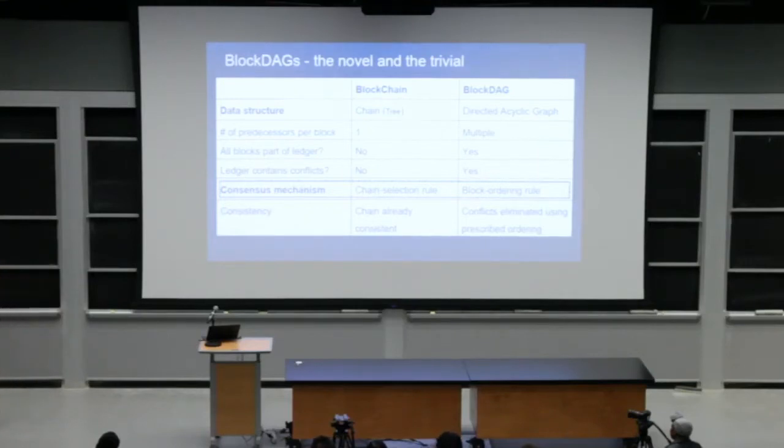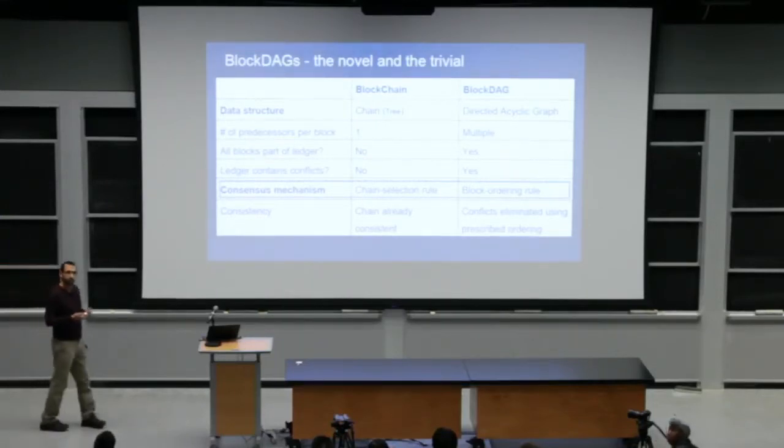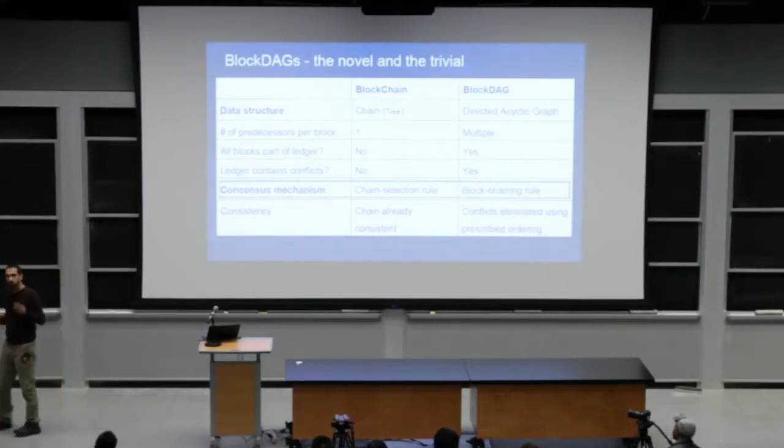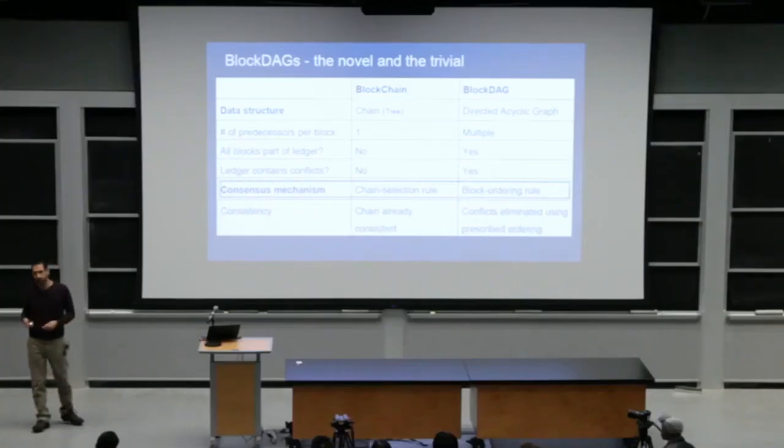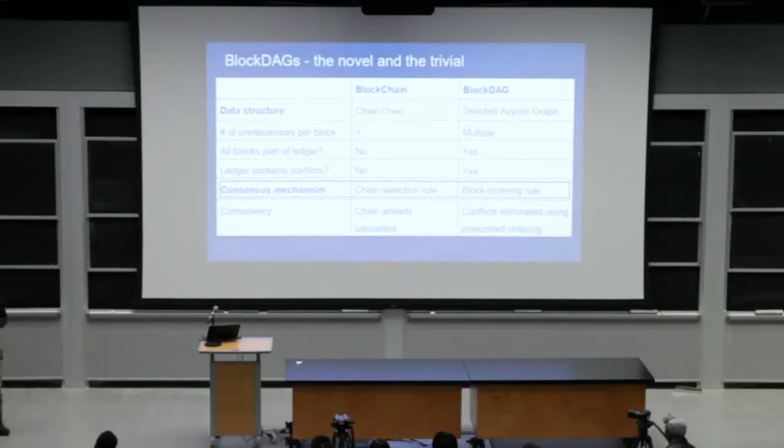So let's compare dads and chains and what are the novel parts of these data structure. So actually the data structure is not novel. It's totally trivial. A chain is totally trivial. It's just a linked list and a dag is totally trivial. It wasn't used in 2005 was used like maybe hundreds of years ago already. It's not an interesting data structure in and of itself. The only part which may or may not be novel in a dad based system is a consensus protocol.